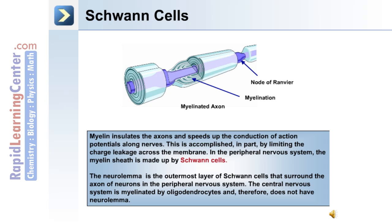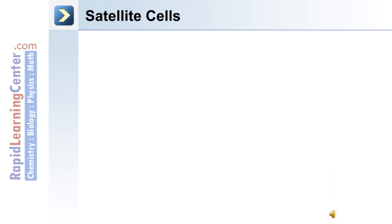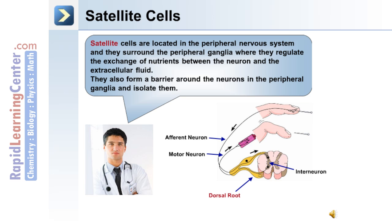The neurolemma is the outermost layer of Schwann cells that surrounds the axon of neurons in the peripheral nervous system. The central nervous system is myelinated by oligodendrocytes and therefore does not have a neurolemma. The other type of glial cells in the peripheral nervous system are the satellite cells, located in the peripheral nervous system. They surround the peripheral ganglia, regulate the exchange of nutrients between the neuron and the extracellular fluid, and form a barrier around neurons in the peripheral ganglia to isolate them.